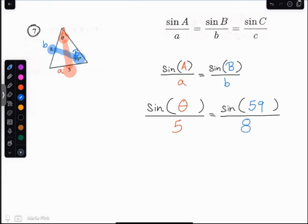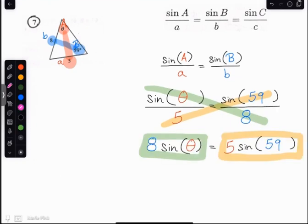So then I'm going to go ahead and cross multiply. I'm going to do this stuff multiplied together equals this stuff multiplied together.